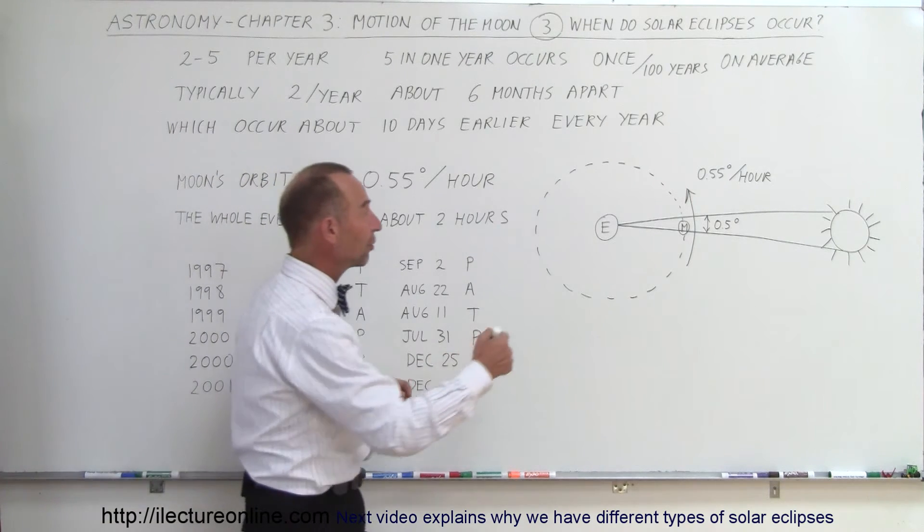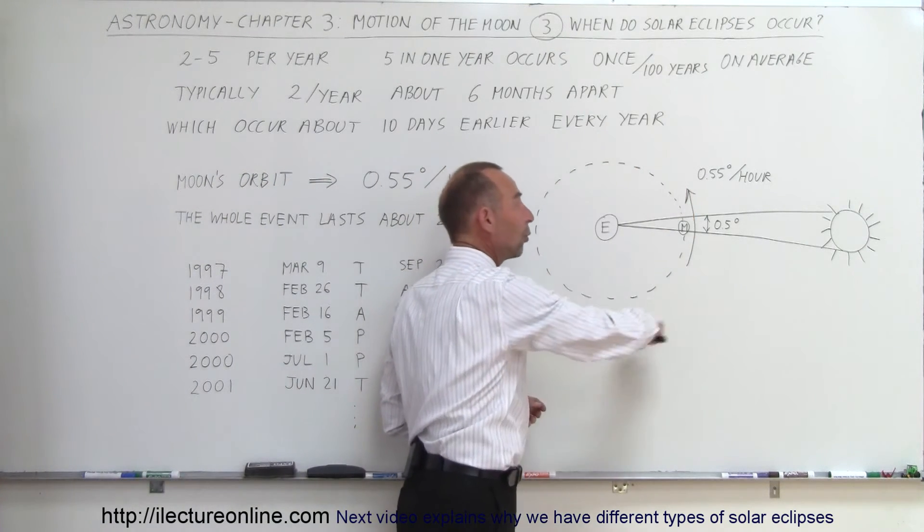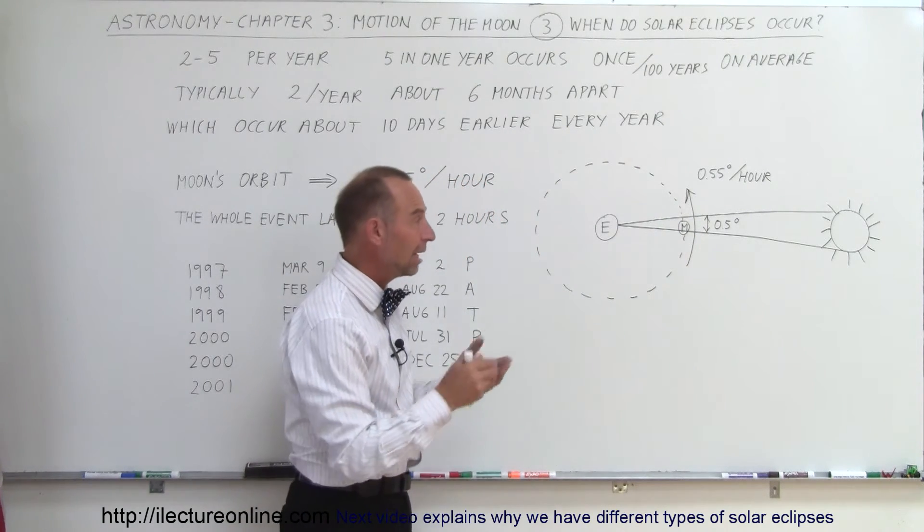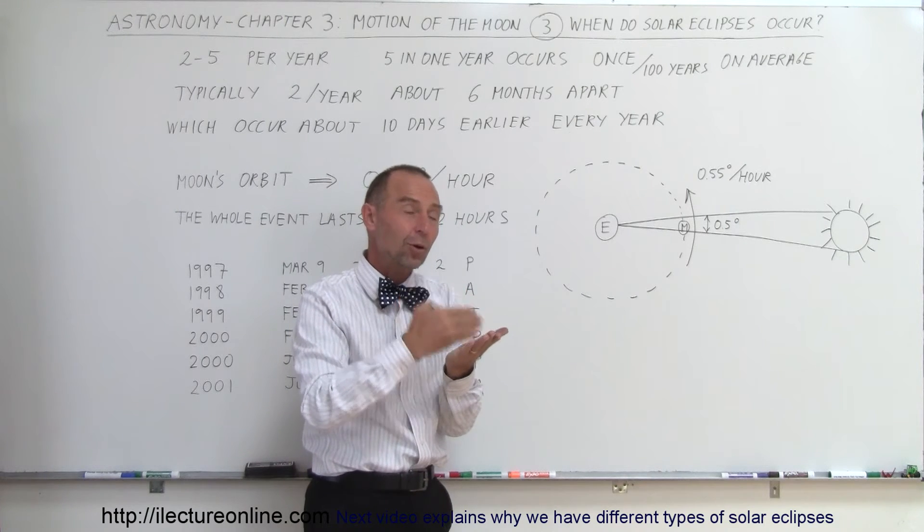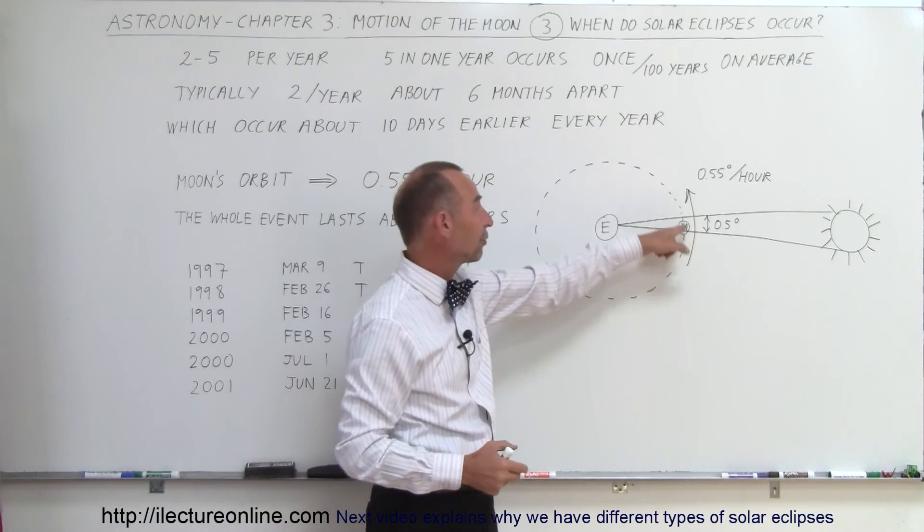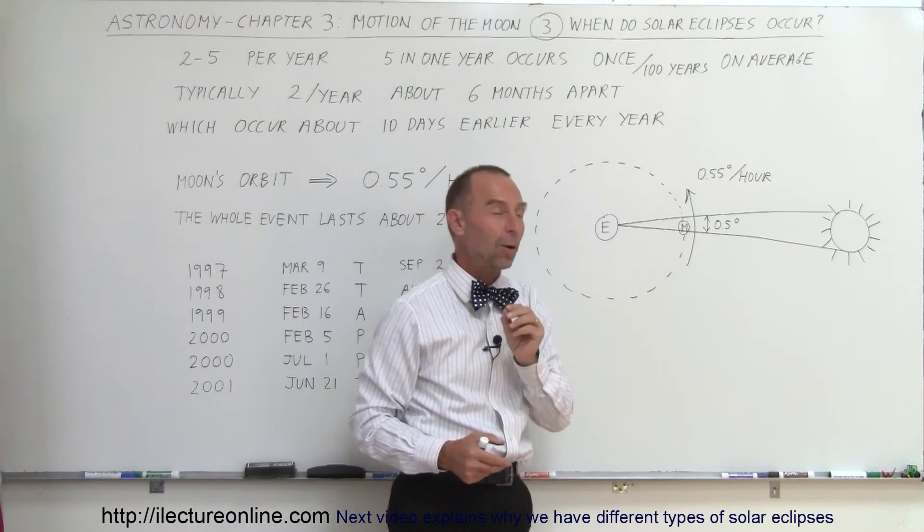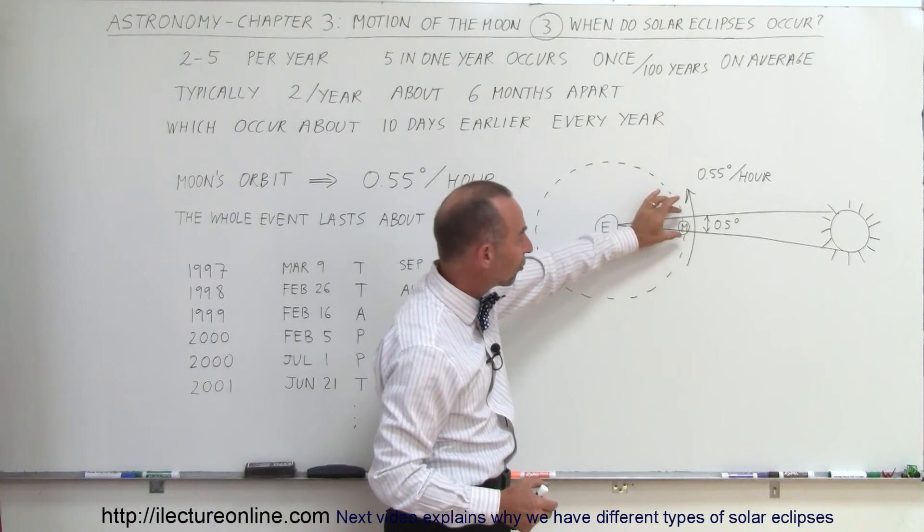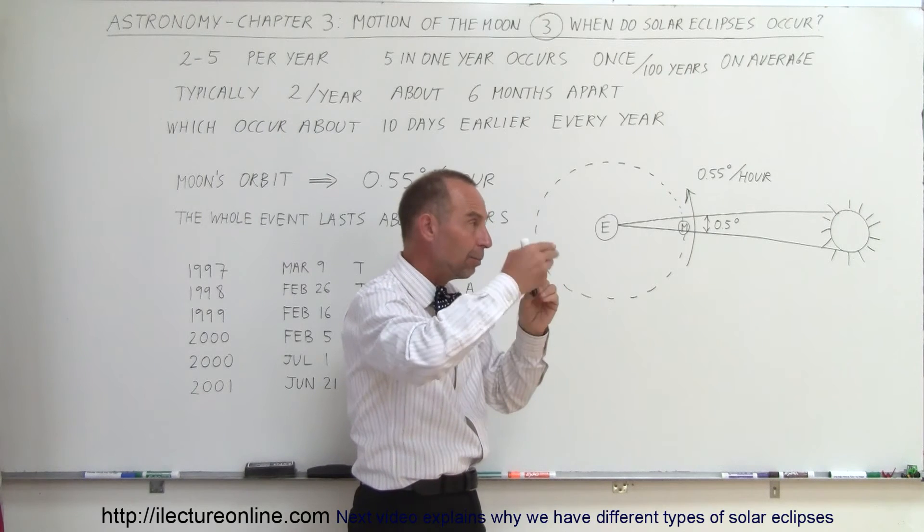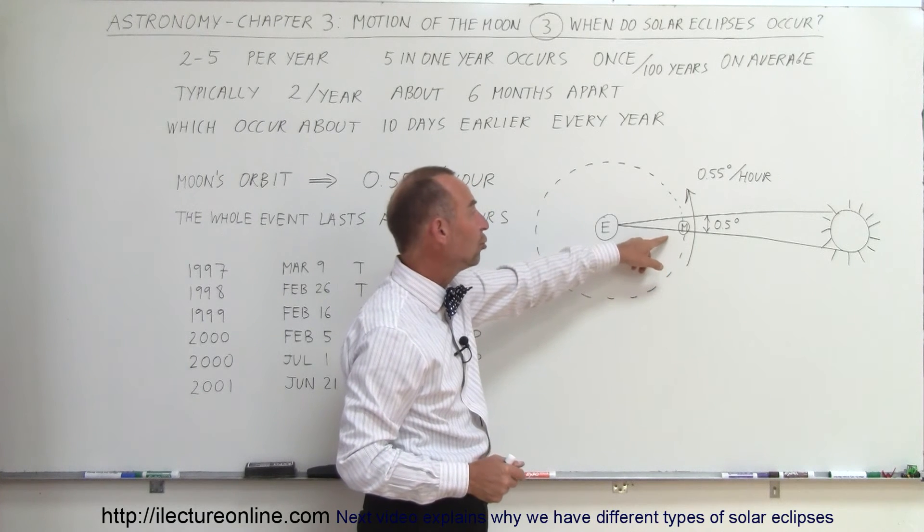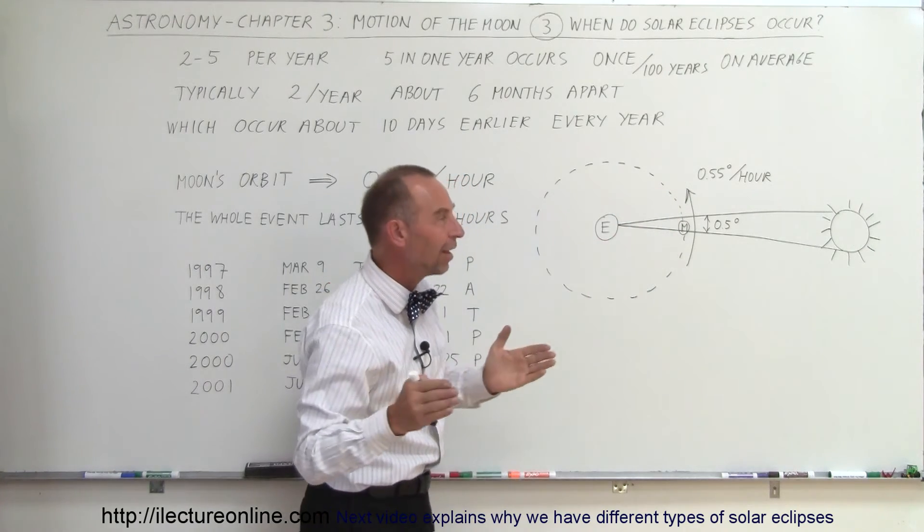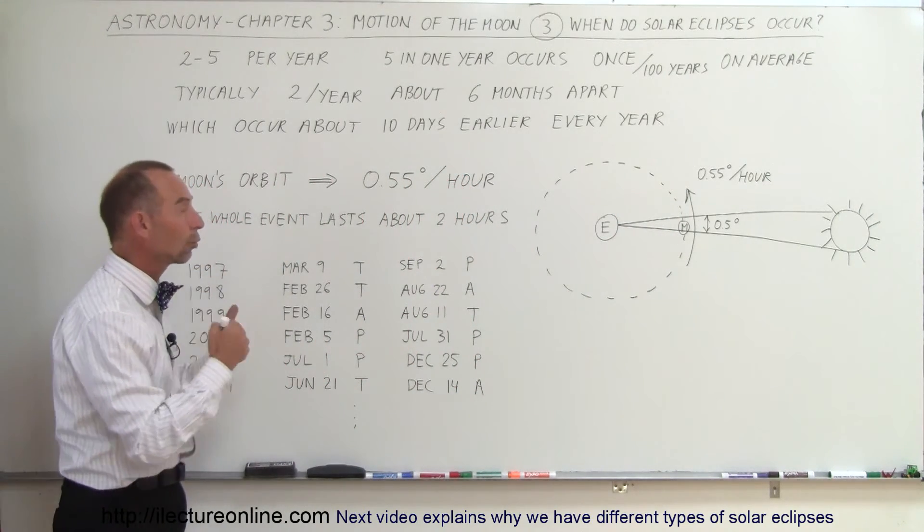Now notice that as the Moon travels around the Earth, it does so in 27.3 days, and of course, one complete orbit is 360 degrees. If you divide 360 degrees by the number of hours in 27.3 days, you find out that the rate of travel for the Moon is 0.55 degrees per hour. And since the disk of the Sun is about a half a degree, the Moon, as it goes through that disk, can travel as much as two hours when it starts covering the Sun to where it finishes covering the Sun, so the whole event can take as much as two hours in the case of a total solar eclipse.